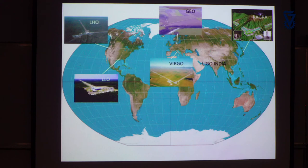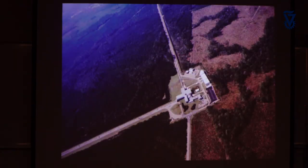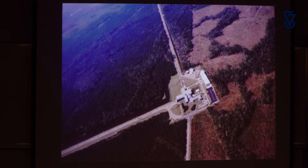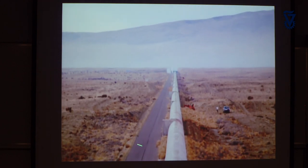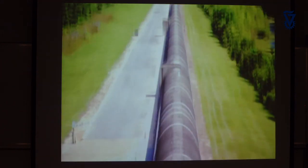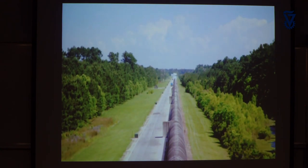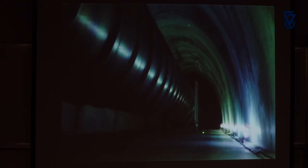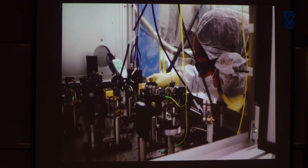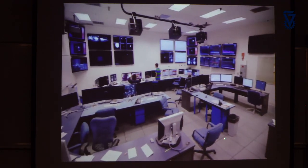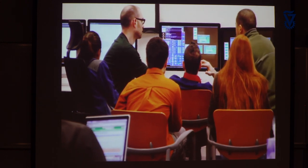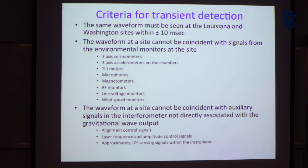Here's a quick look at the LIGO sites: Hanford in Washington State, with the beam tube and a mountain in the background; Livingston in Louisiana, which looks very lush and different. Here's a typical laser table and people working on it, and the control room at the Livingston site — operators learning how to run the instrument.